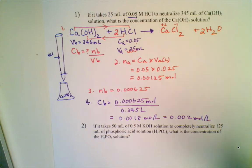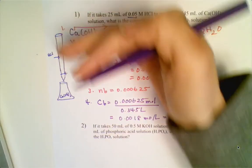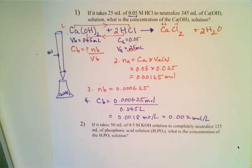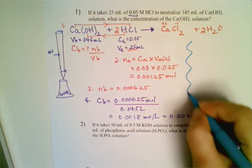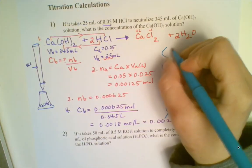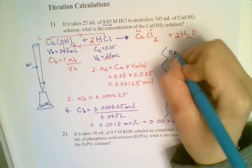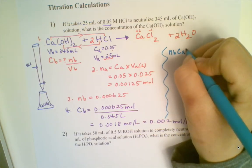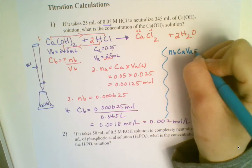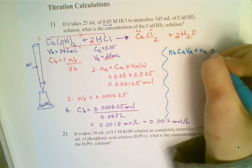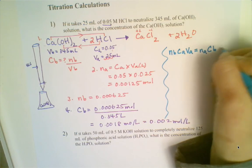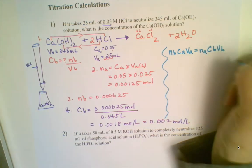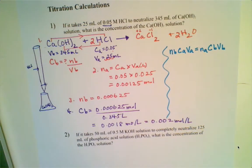There's another way: a generalized formula. You can use: (moles of base) × (concentration of acid) × (volume of acid) = (moles of acid) × (concentration of base) × (volume of base). Let's see how that works.